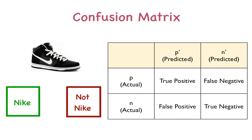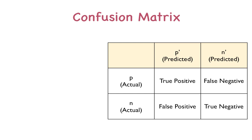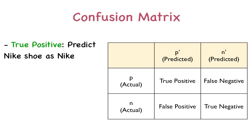In the table, P represents that the shoe is actually Nike. N represents that the shoe is actually not Nike. P-bar represents that your system has predicted the shoe as being Nike. From these two rows and columns, we have four possible outcomes. We have a true positive, which occurs when the system takes a sample Nike shoe and also classifies it as being Nike — so the system is correct.